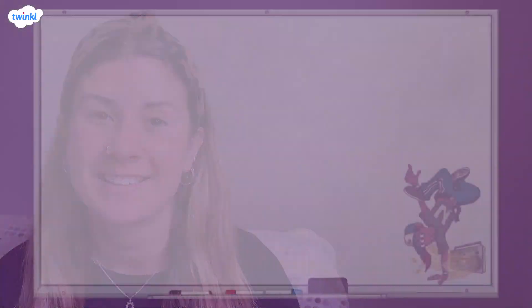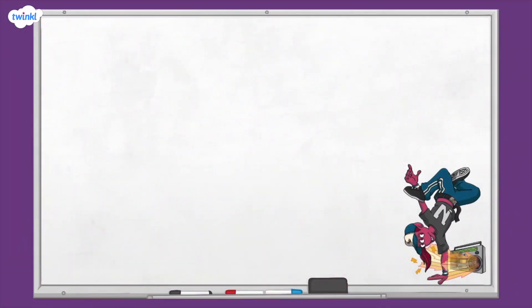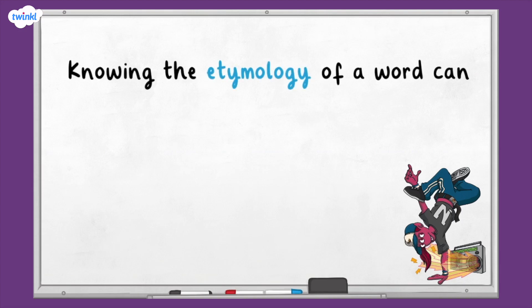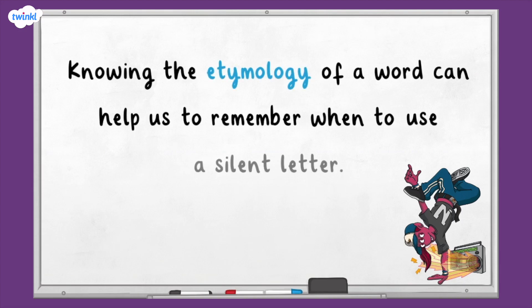As modern English has evolved over many hundreds of years, lots of the words that we use today have a history that spans back over multiple languages and countries. Although there isn't a set rule for knowing when a word will use a silent letter, knowing the etymology of a word can help us to remember when to use them. When you've finished watching this video, why don't you try looking up the history of some other words with silent letters to see which language they originally came from?